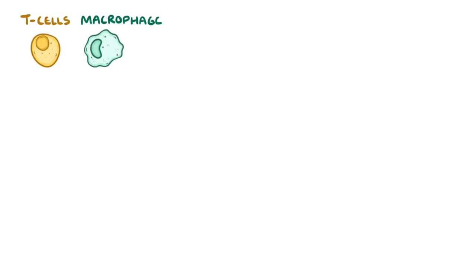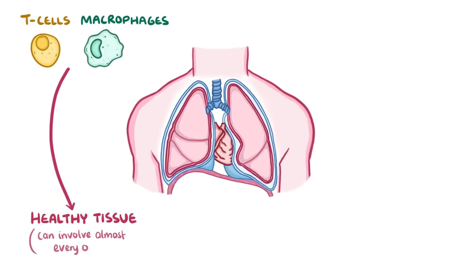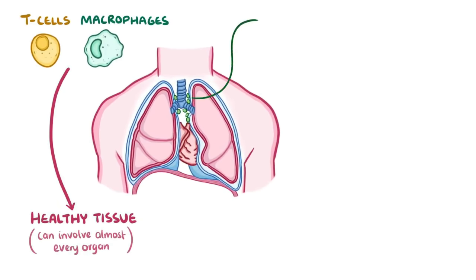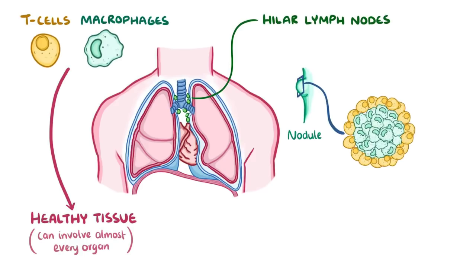So, when sarcoidosis is triggered, T cells and macrophages get attracted to a particular spot of healthy tissue. Sarcoidosis can involve nearly every organ, but they most often involve hilar lymph nodes, which are the lymph nodes near the point where the bronchi meets the lung. As more and more immune cells gather at a particular spot, they form small nodules called granulomas.